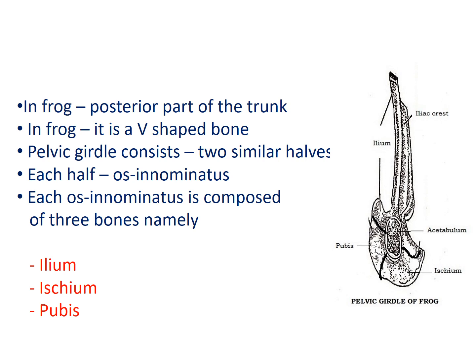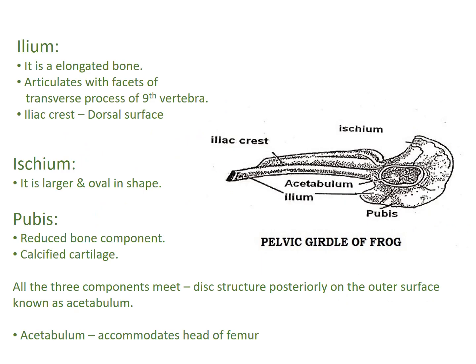In this slide, you are going to see only the left half of the Pelvic Girdle. Coming to the components: Ilium forms the first component of the Pelvic Girdle. Ilium is an elongated bone, as you can see in the diagram, which extends anteriorly. At the anterior end of the Ilium bone you can see the presence of an Articular Facet which articulates with the transverse process of the 9th vertebral column. On the dorsal surface of the Ilium bone you can see the presence of the Iliac Crest.